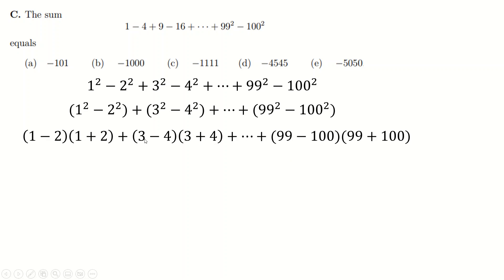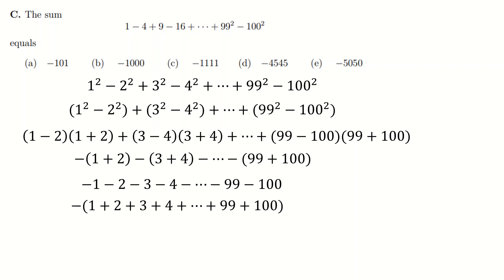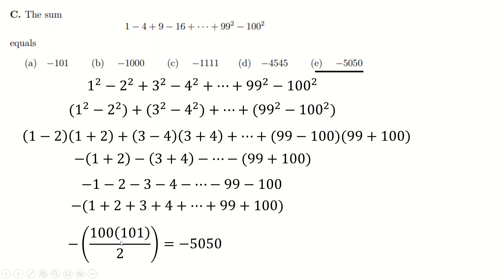All the leading brackets are minus one every single time — one minus two, three minus four, five minus six, and so on. So it's just minus all of the trailing brackets. If you expand those out, you get minus one, minus two, minus three, minus four, minus five, minus six... Factorize out a minus one, and now you're just looking for the sum of the first 100 integers. The formula is n times (n+1) over 2, giving the final answer.